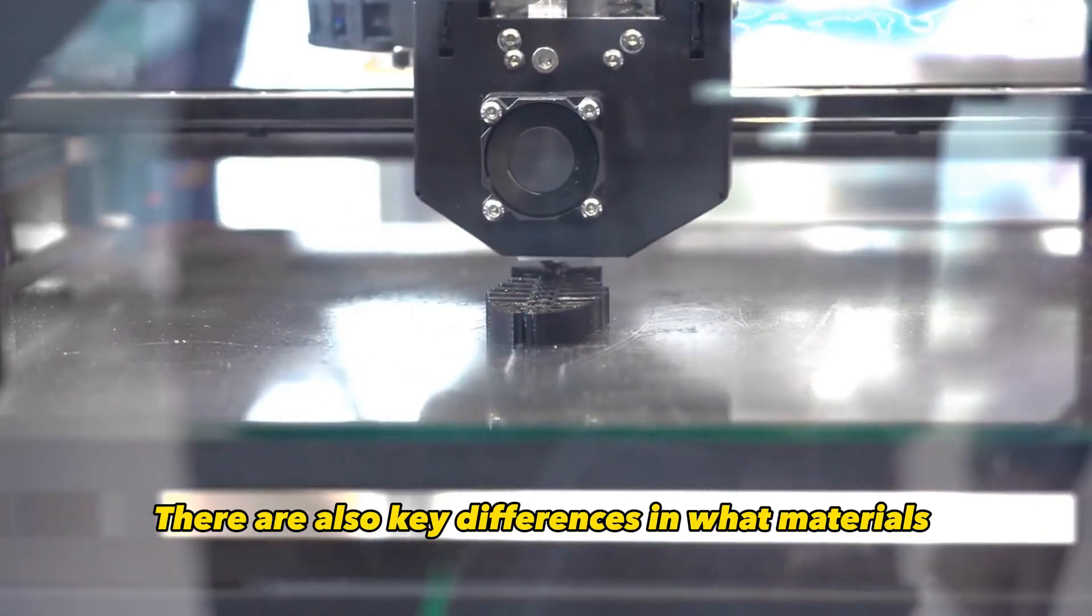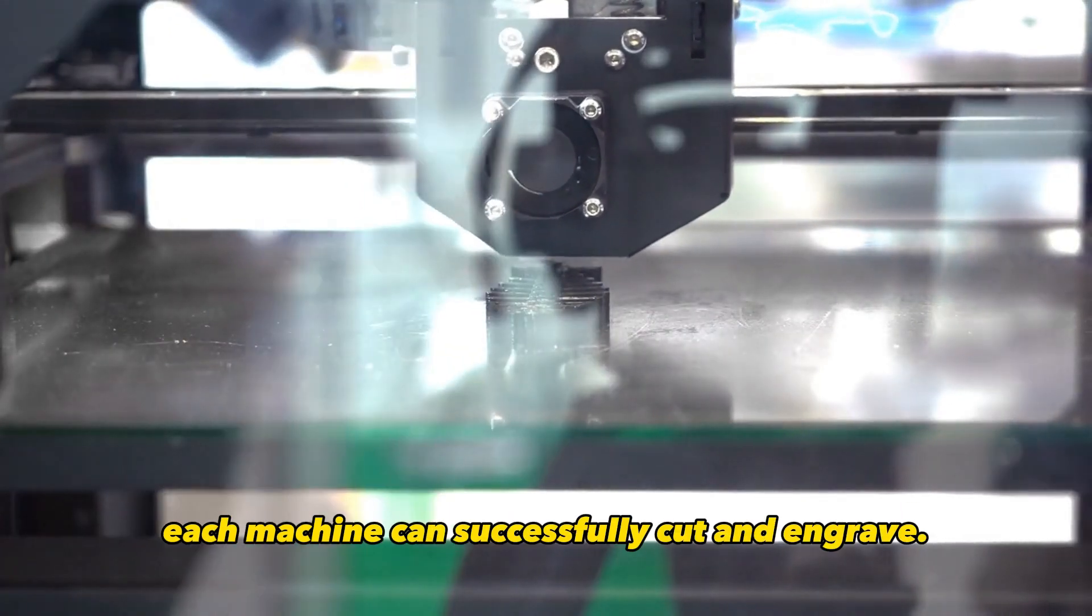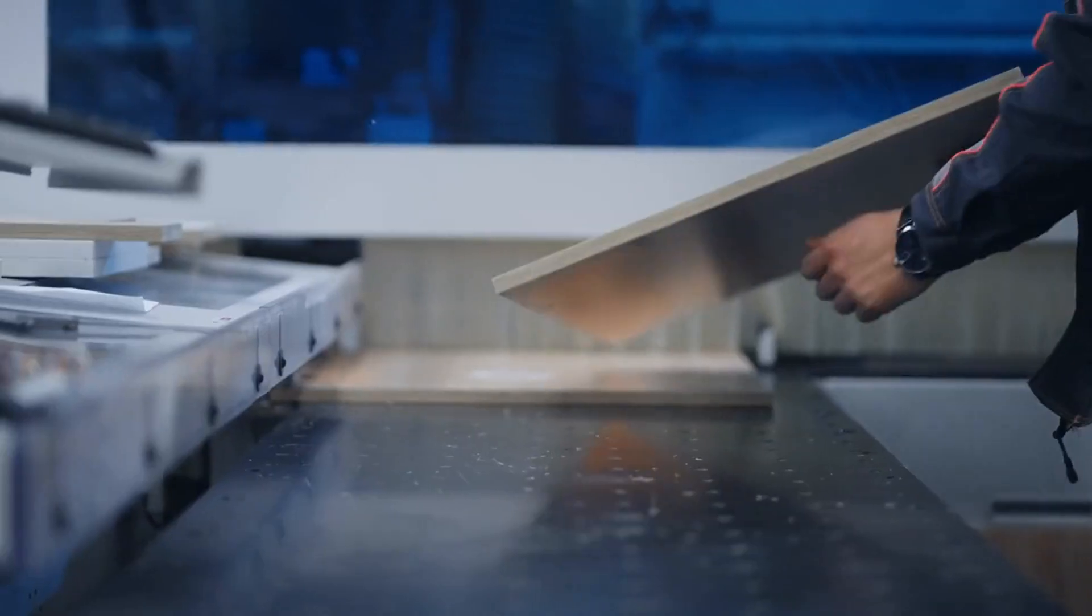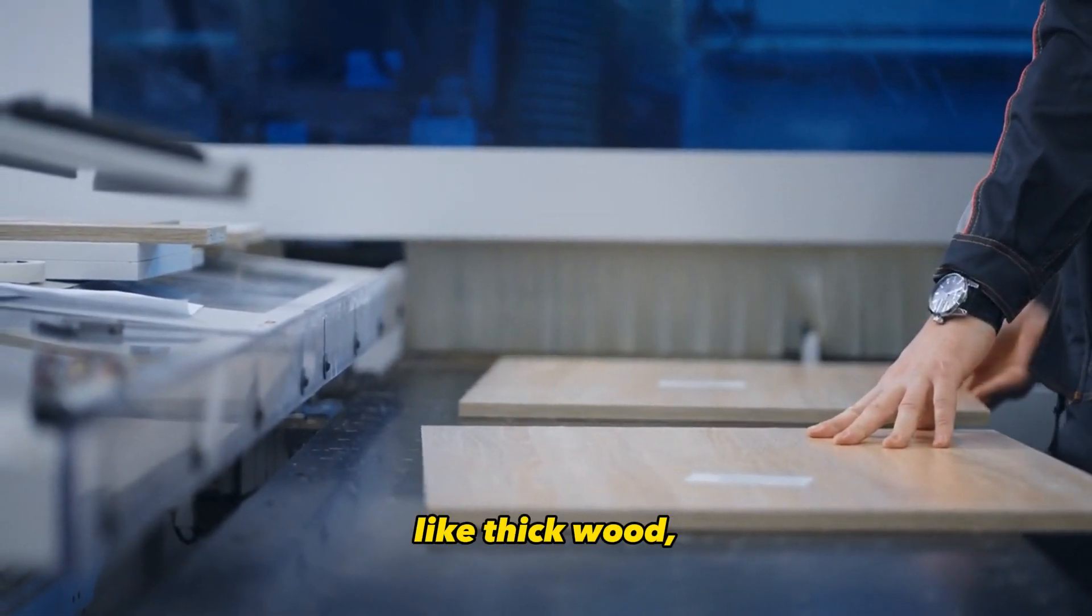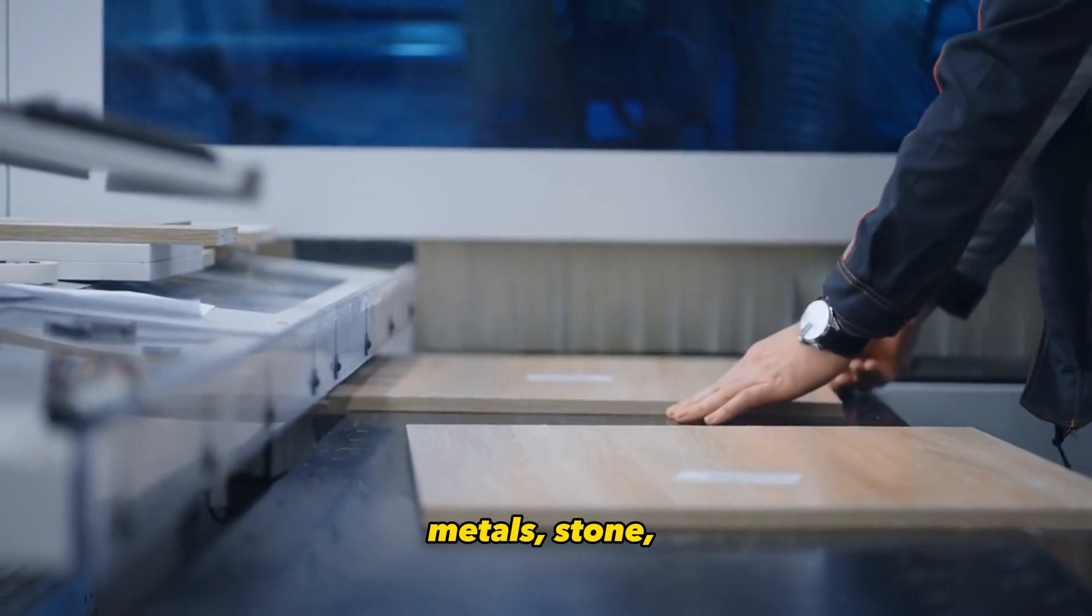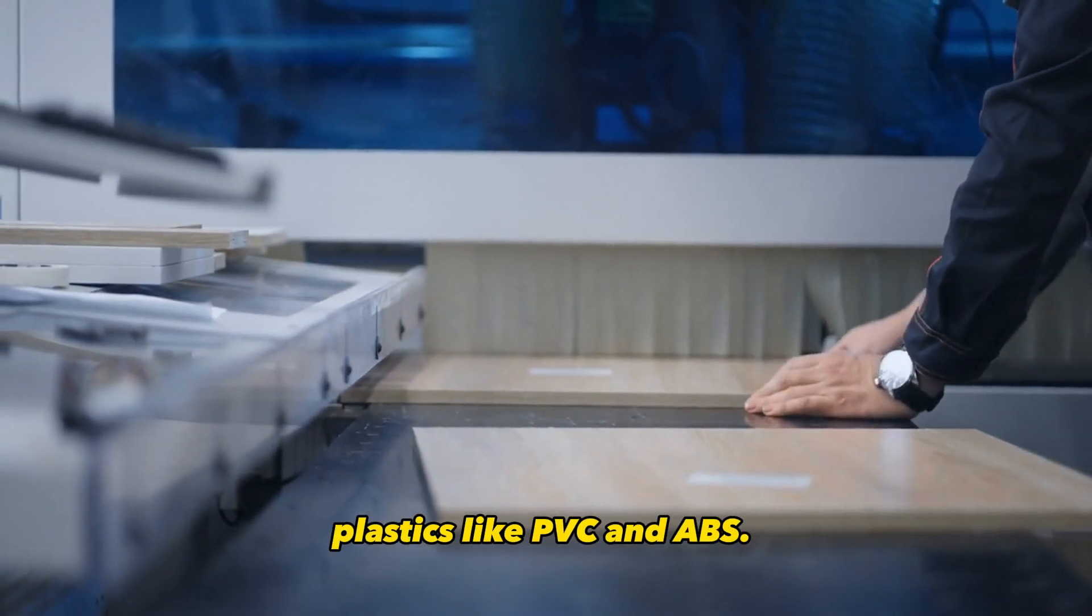There are also key differences in what materials each machine can successfully cut and engrave. CNC routers can cut tougher materials that lasers can't handle, like thick wood, metals, stone, plastics like PVC, and ABS.